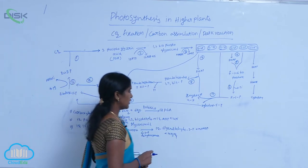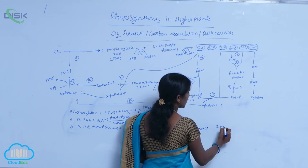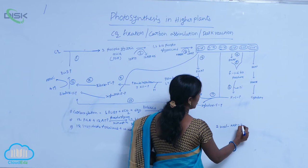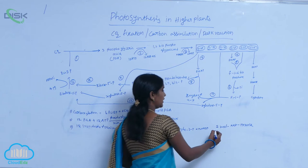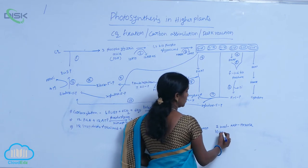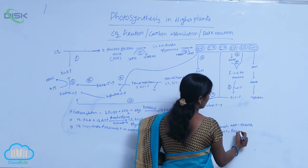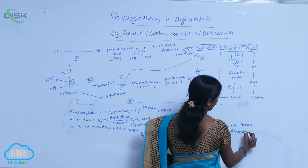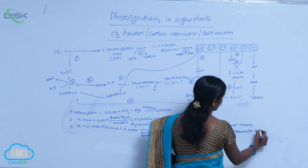Out of 12 molecules, 2 molecules are used for net production of hexose molecule and remaining 10 molecules are used for regeneration of RuBP. Regeneration of RuBP.